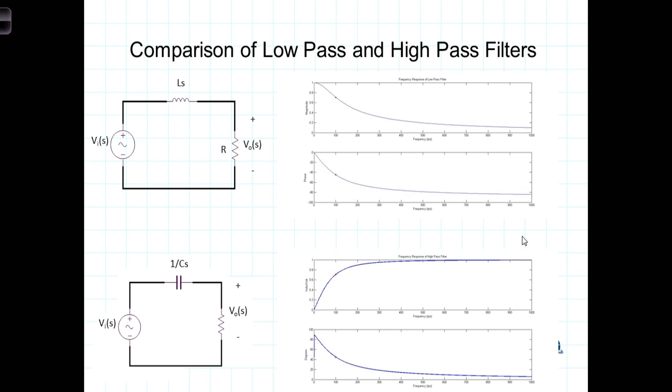Let's now make a comparison between the structures of the low-pass and high-pass filters. Here we have a low-pass filter where we found that its transfer function H(S) was equal to R over L over S plus R over L, and we determined that this value R over L was the cutoff frequency.